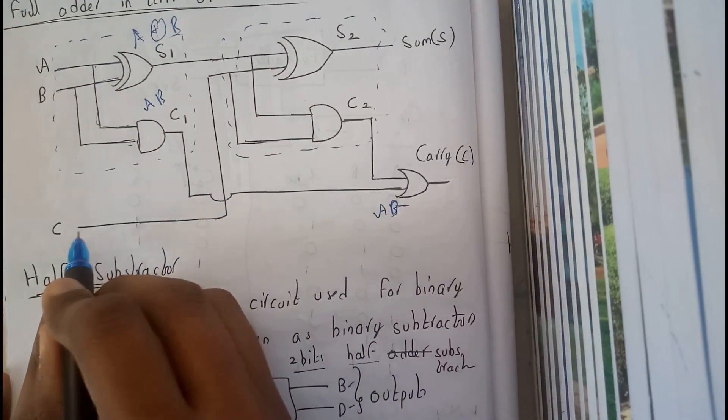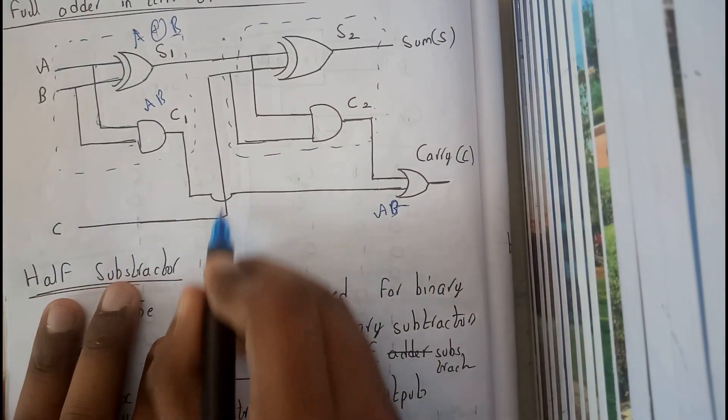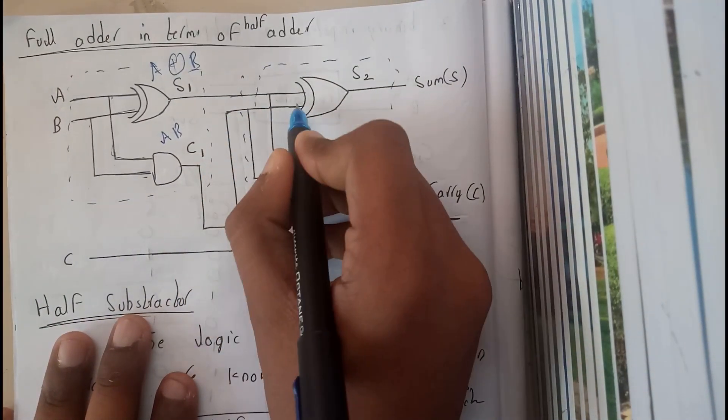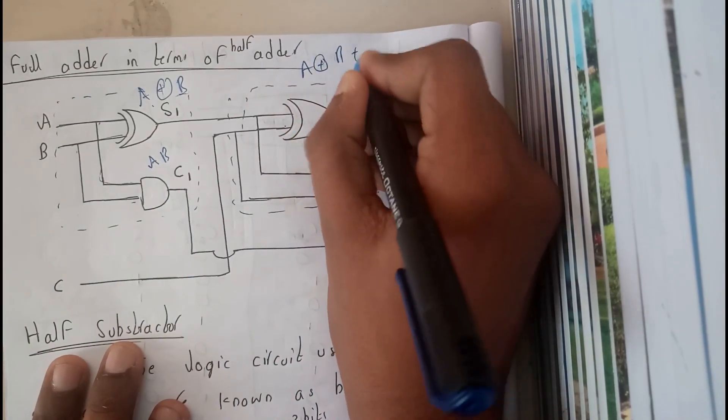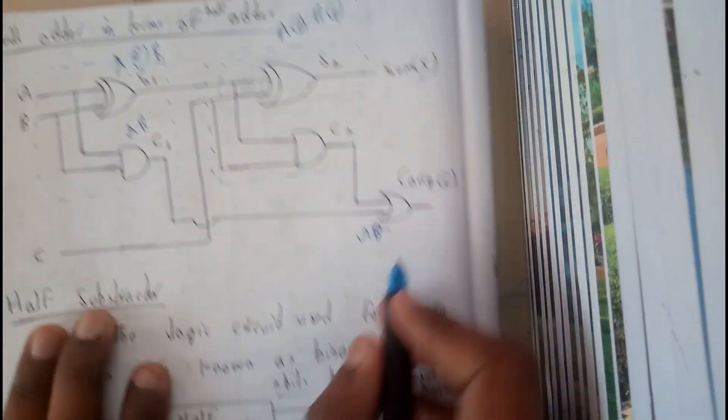And this C moves all the way up to here and it touches with this. So A exclusive or B, A exclusive or B, exclusive or C will be the sum. And carry nothing but the multiplication of these two.